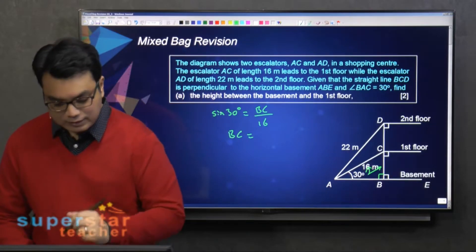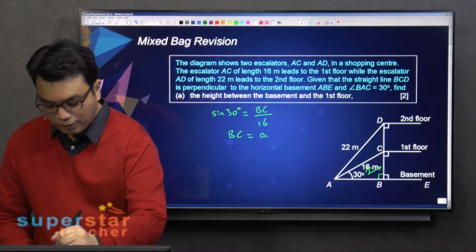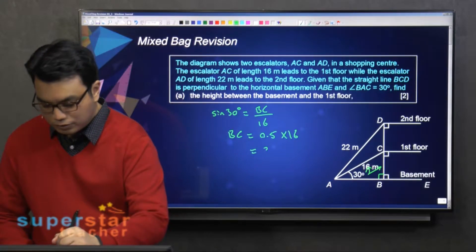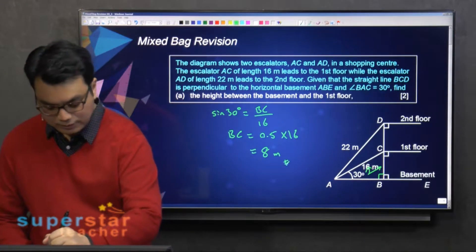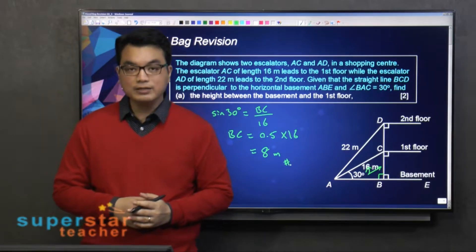So BC is sine 30 degrees, which is 0.5 times 16. So it's 8 meters. Okay, so this is the height.